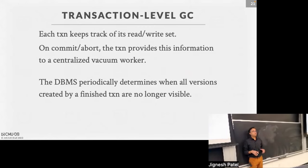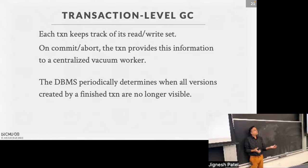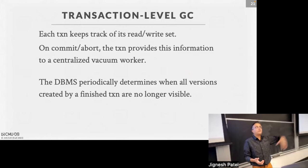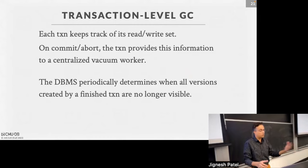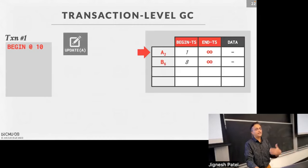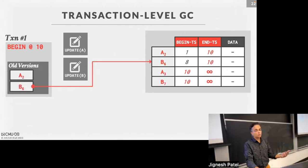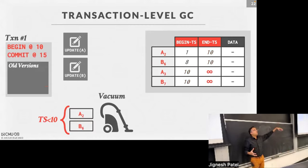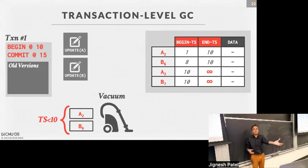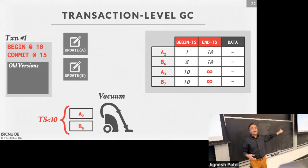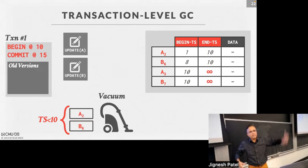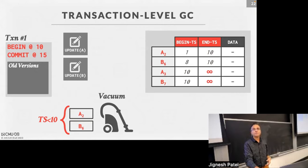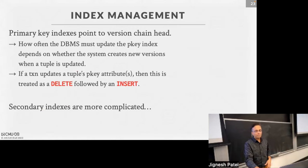Transaction-level garbage collection works differently: every transaction keeps track of all the versions it has outdated by creating new versions. When a transaction finishes, it knows it created versions for records A and B, and hands those off to a vacuum process. The vacuum process can then determine: my oldest needed version is 10, so anything with version less than 10 can be cleaned up - without scanning every page.